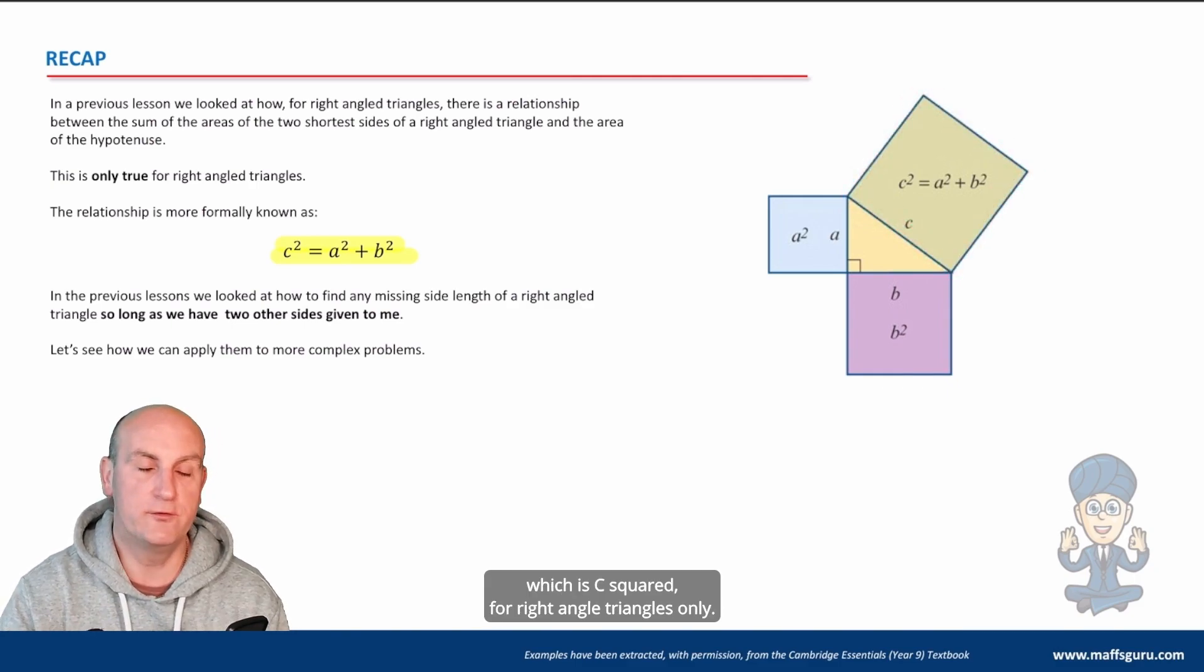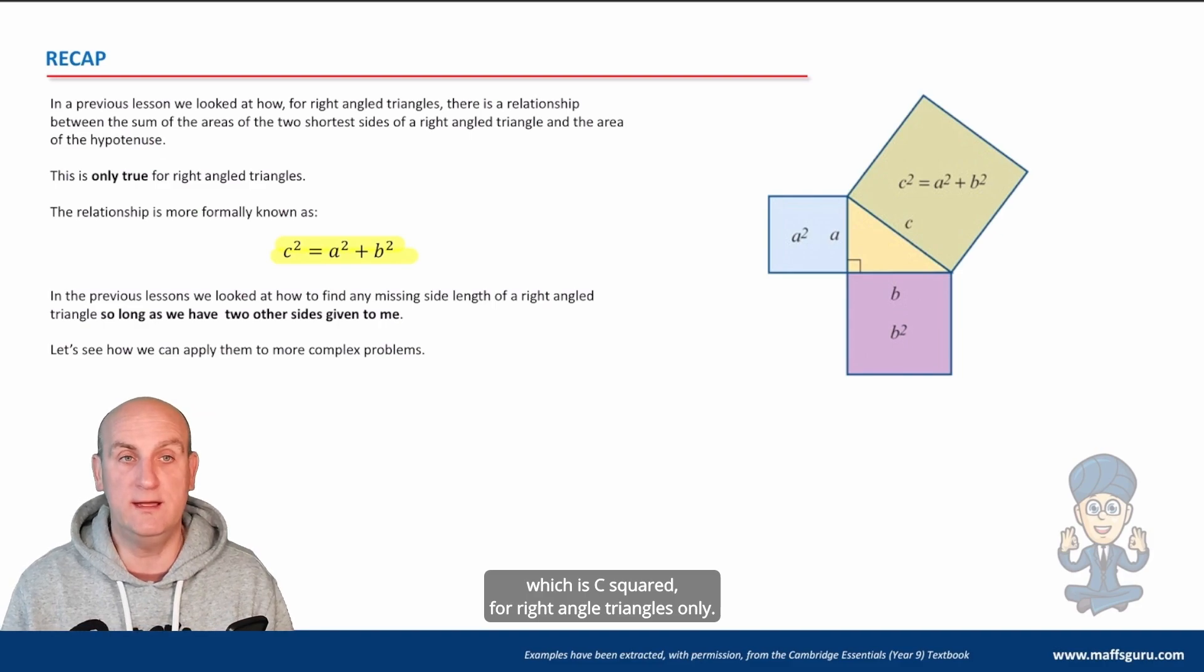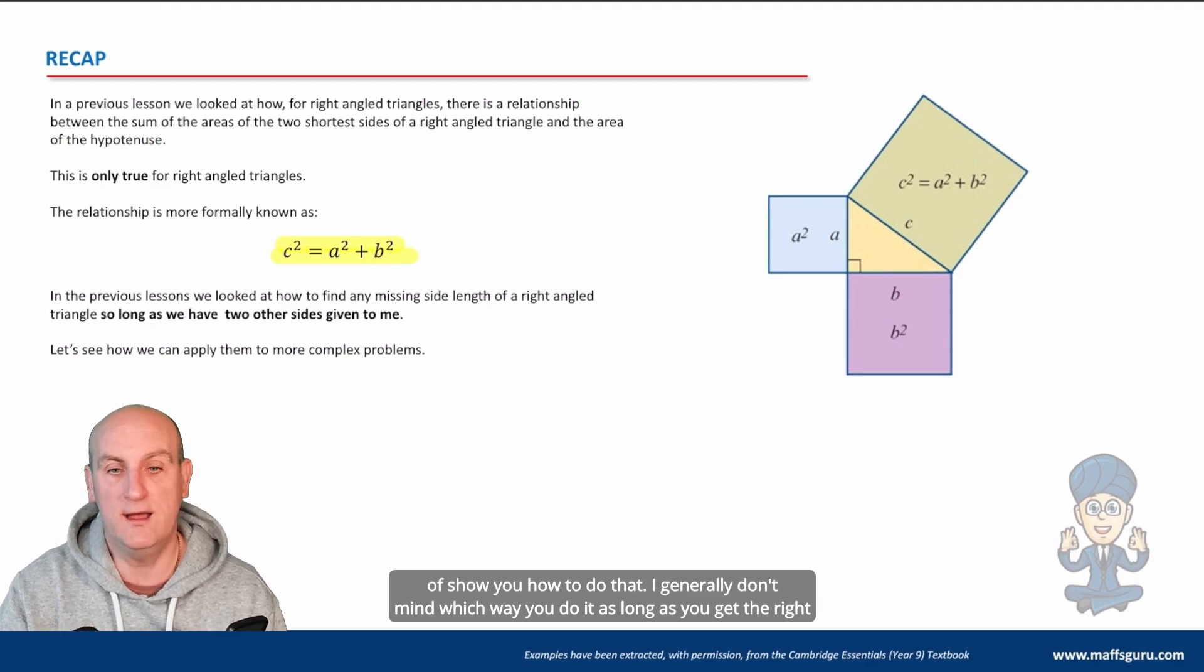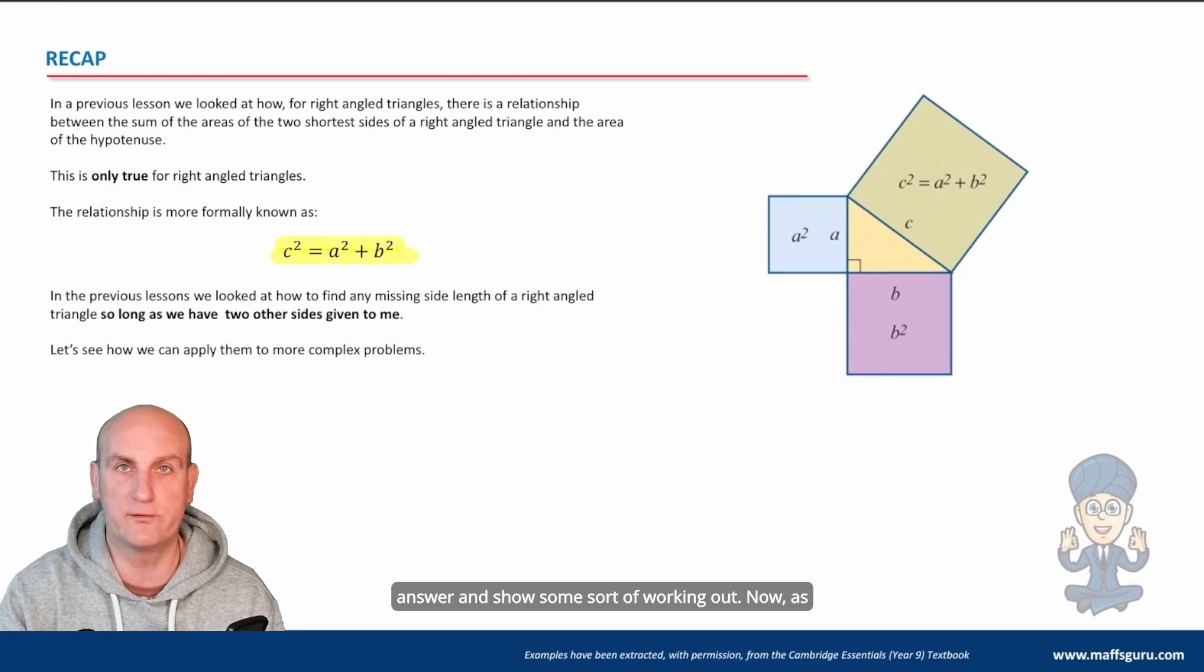which is c squared for right angle triangles only. All right so again there are alternative ways of doing that and my first couple of videos show you how to do that. I generally don't mind which way you do it as long as you get the right answer and show some sort of working out.